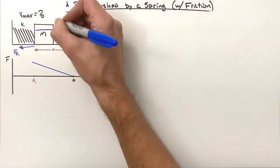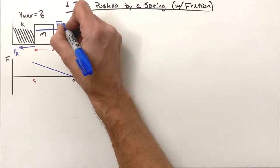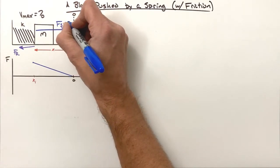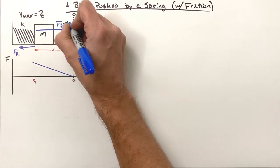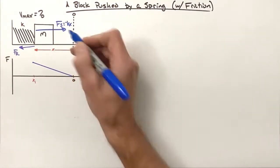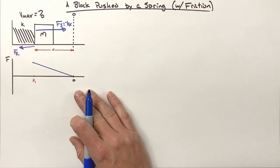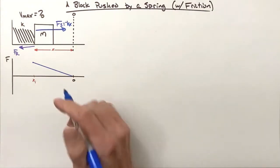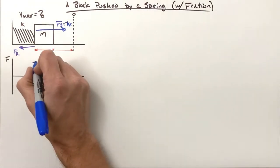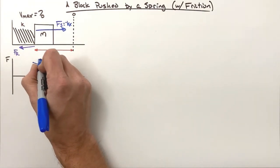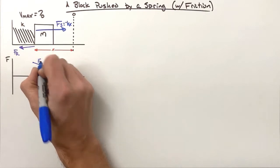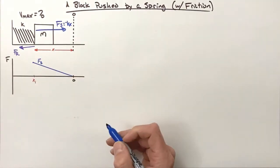That linear relationship between displacement from equilibrium and force is simply: the force by a spring equals negative kx — which you've seen before. So here we have, labeled, the force by the spring.